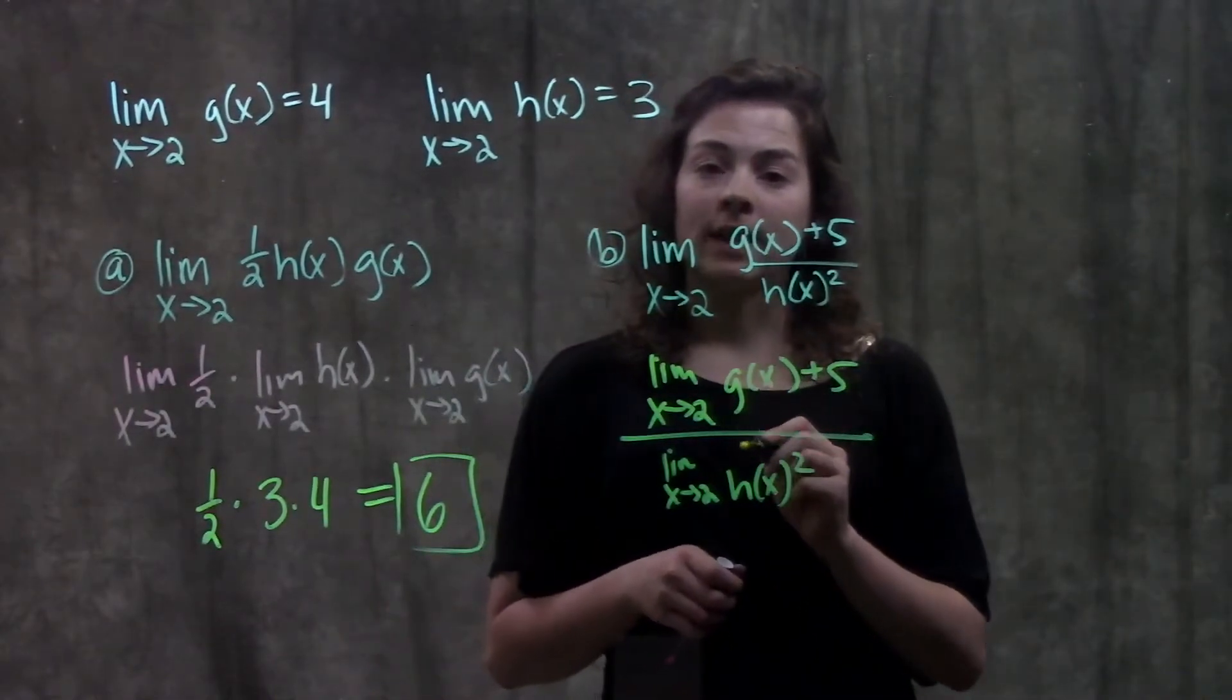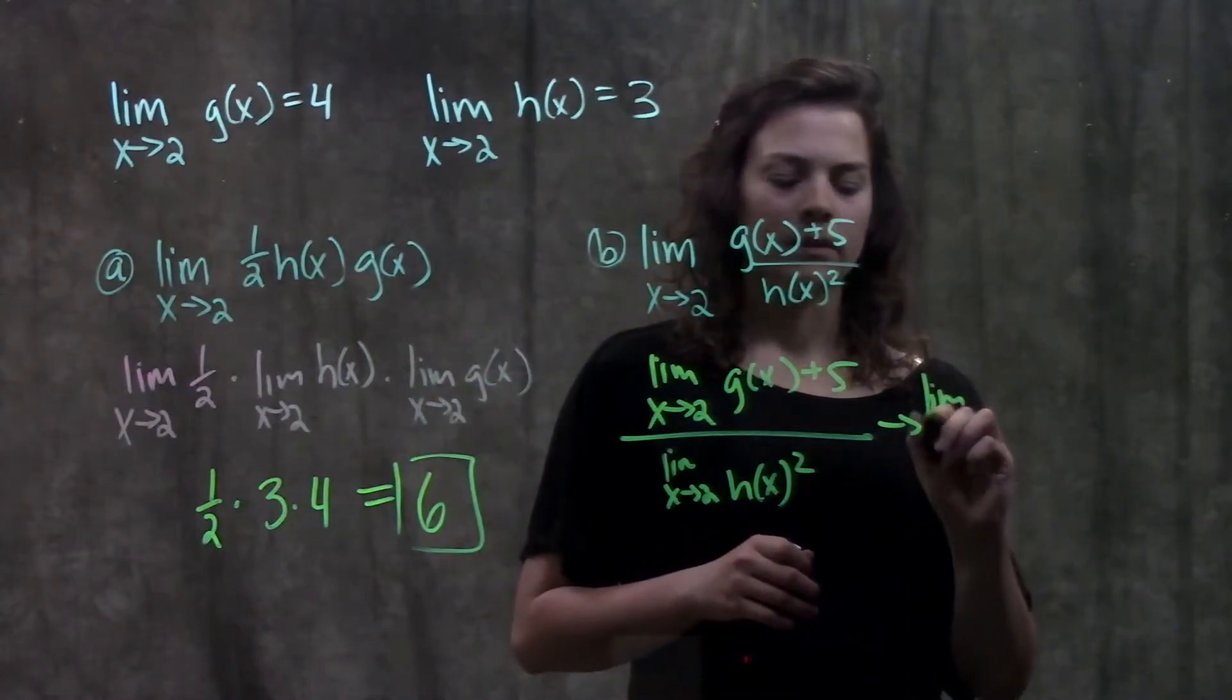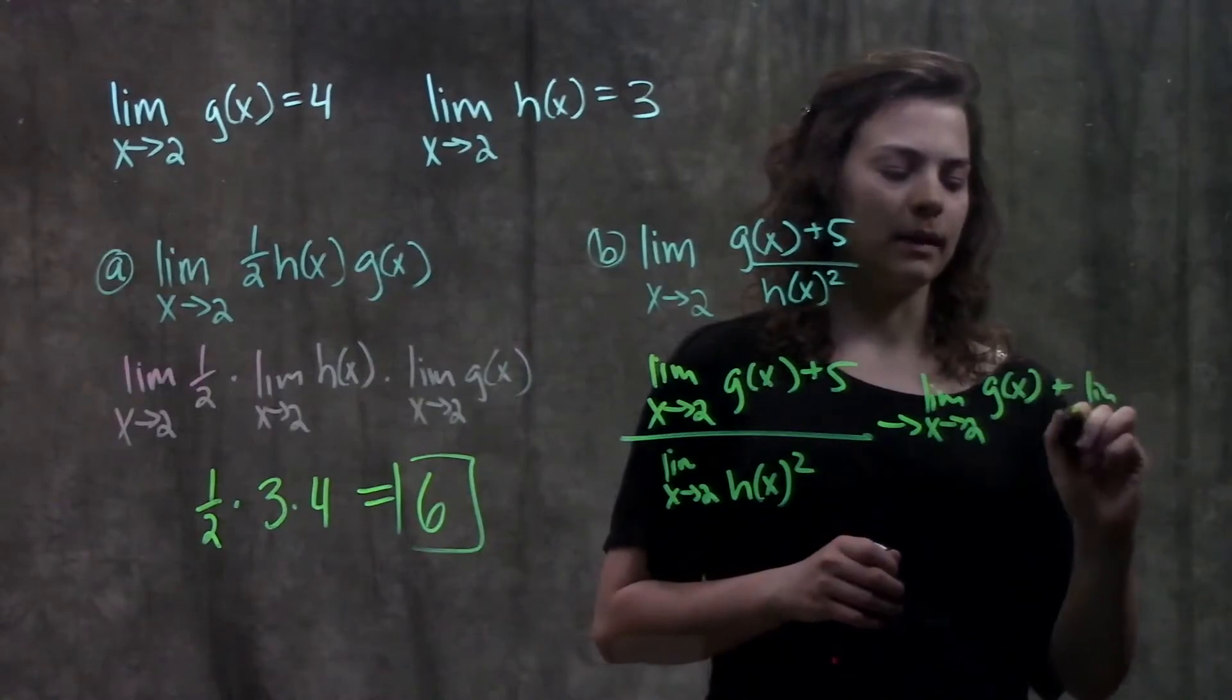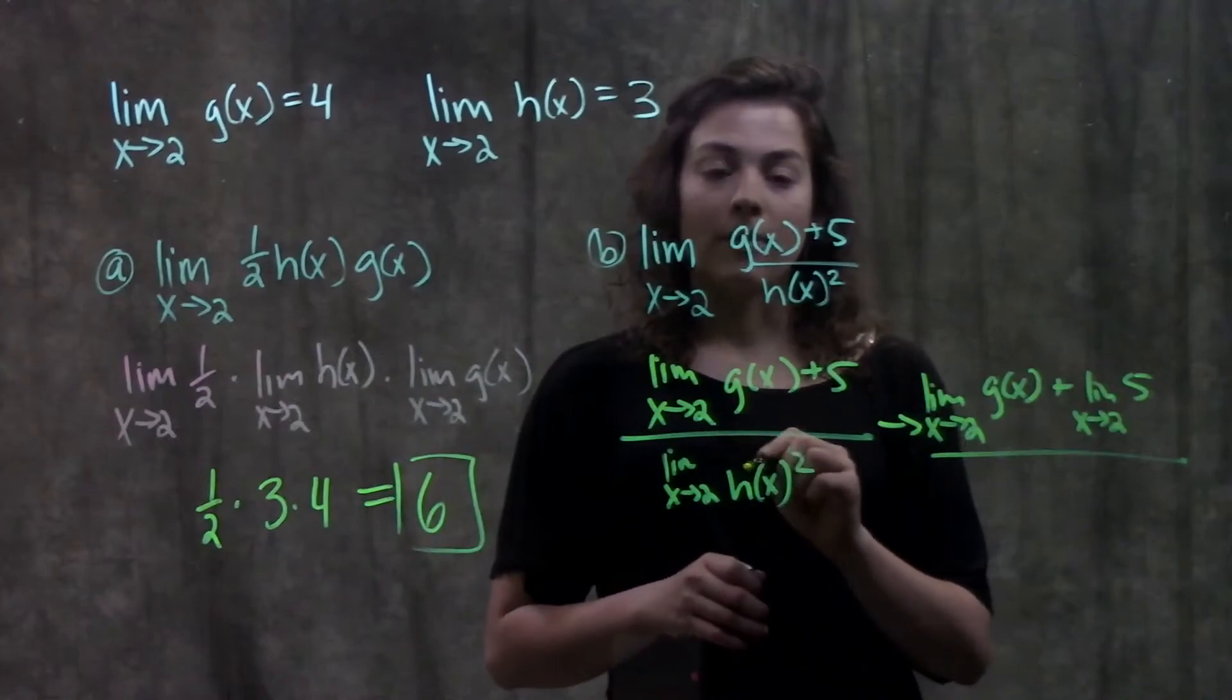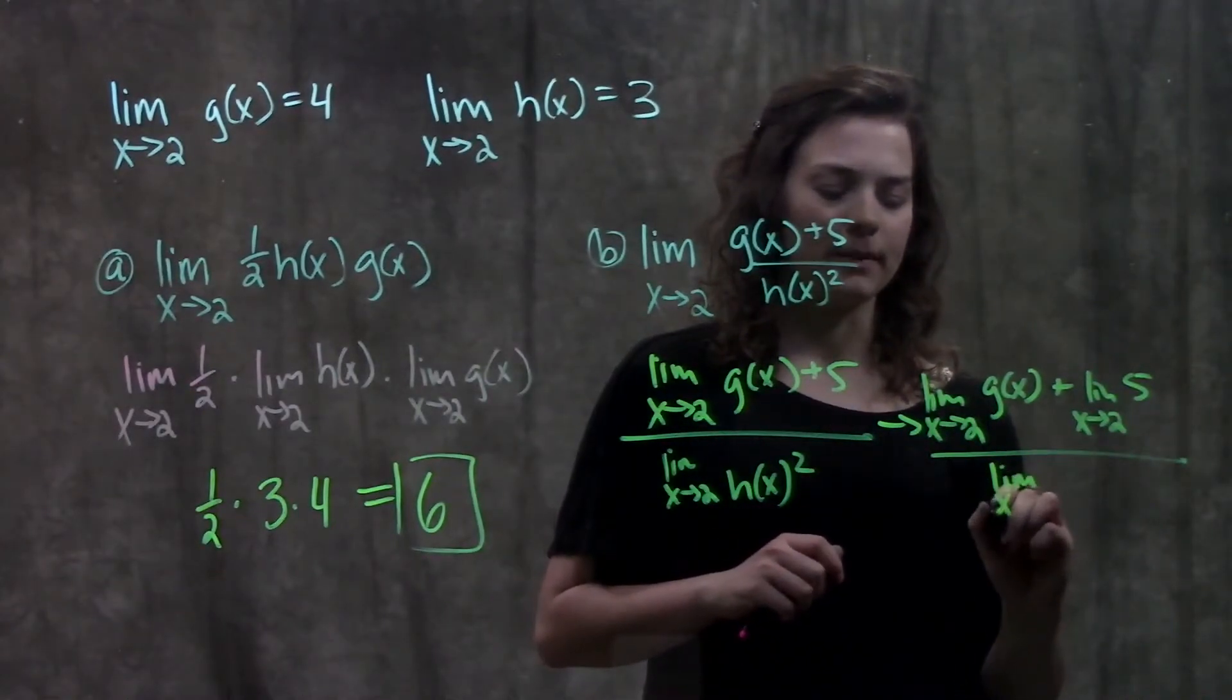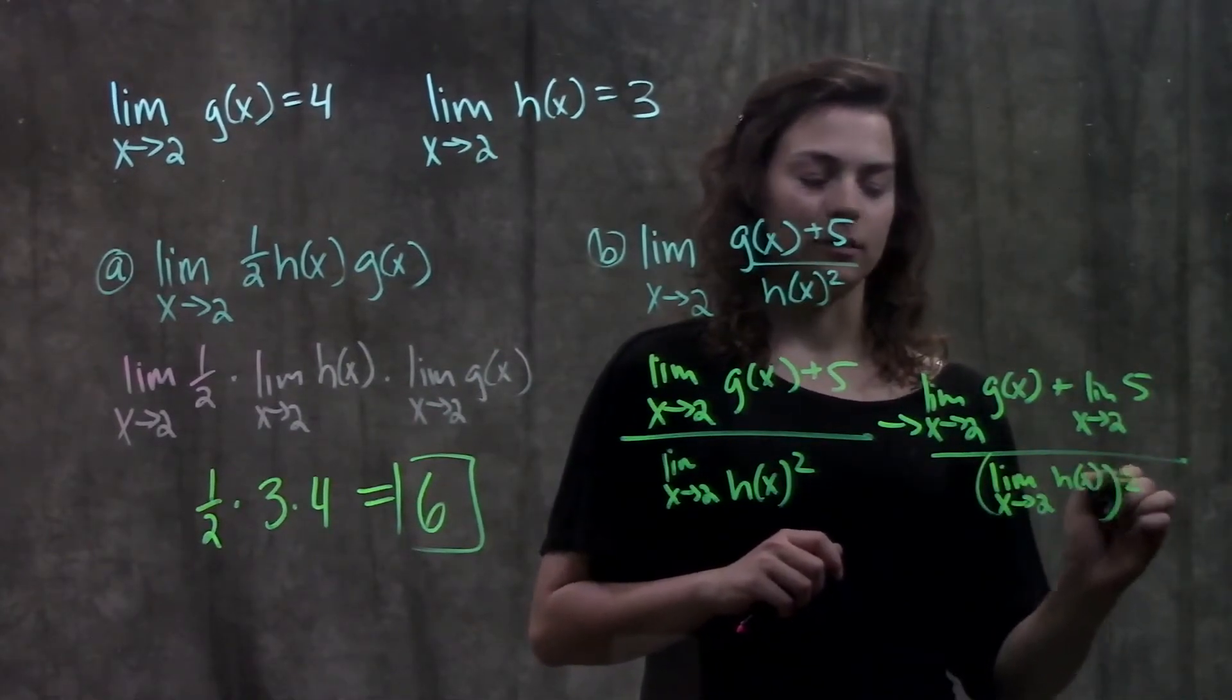And now both of these things can be separated out further. Up here on the top, I can use my addition rule. And now it becomes the limit of g of x plus the limit as x approaches 2 of 5. And all of that is over, on the bottom here, I can just move this power to the outside. So it becomes the limit as x approaches 2 of h of x, all of that squared.